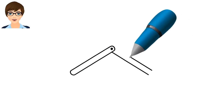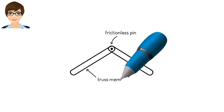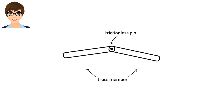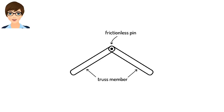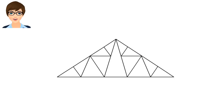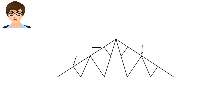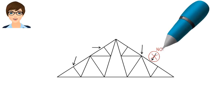Generally, we assume truss members are connected to each other using frictionless pins. This means if we have two truss members joined together, one is free to rotate relative to the other. In other words, truss joints cannot resist any bending moment. Since neither the joints nor the members are designed to carry bending moment, applied loads need to be placed at the joints only. No load should be applied directly to a truss member.